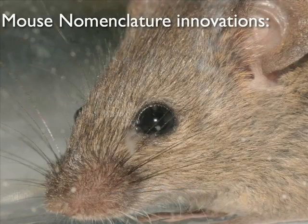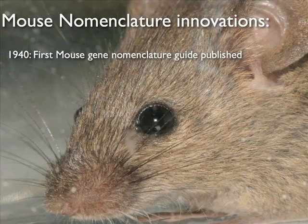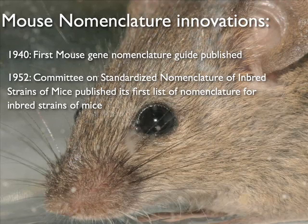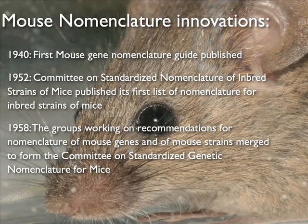Since then, a substantial amount of work has been done on standardization of nomenclature for genes, strains, and QTLs. For example, the first mouse gene nomenclature guide was published in 1940. The Committee on Standardized Nomenclature of Inbred Strains of Mice published its first list of nomenclature for inbred strains in 1952. In 1958, the groups working on recommendations for nomenclature of mouse genes and of mouse strains merged to form the Committee on Standardized Genetic Nomenclature for Mice.